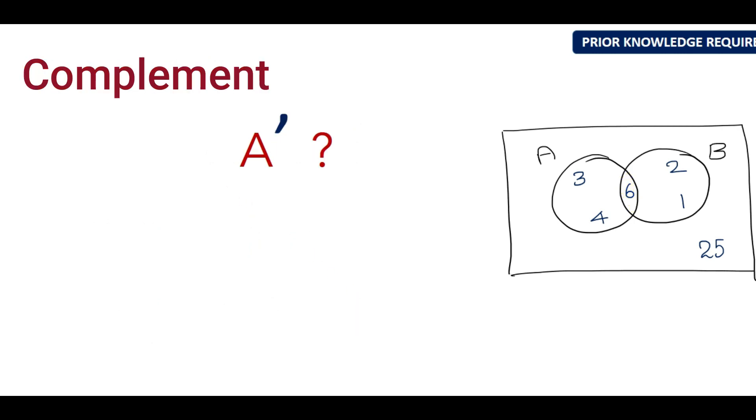Complement. Here A complement means the data that doesn't fall inside the circle A. So that means everything outside of A. So here you have 2, 1 and 25. And N of A complement is the number of elements. You can see 1, 2, 25. So you have 3 elements.